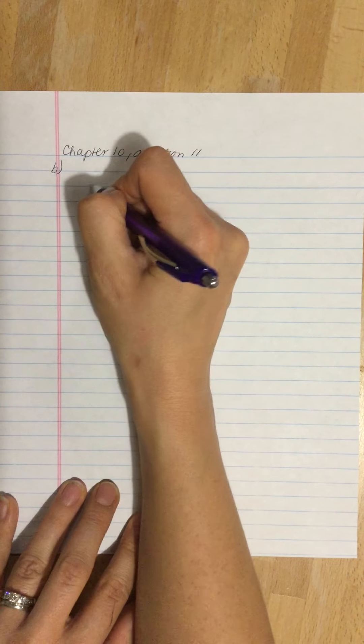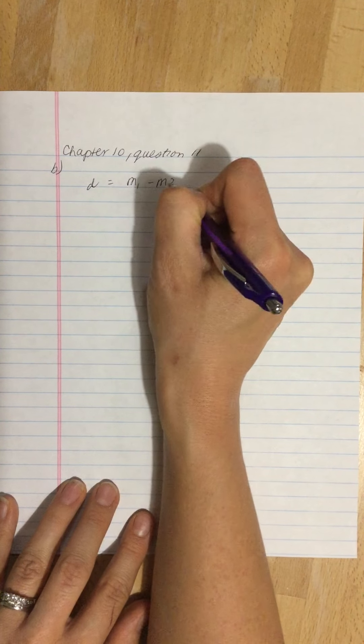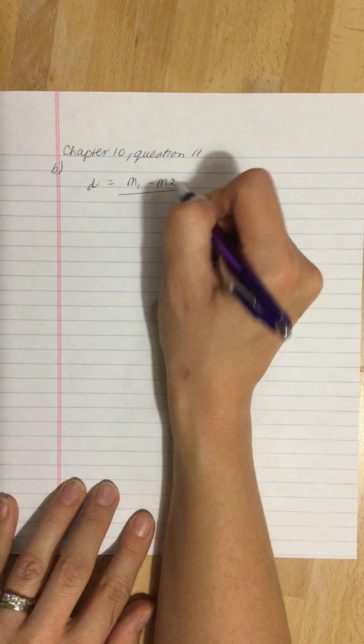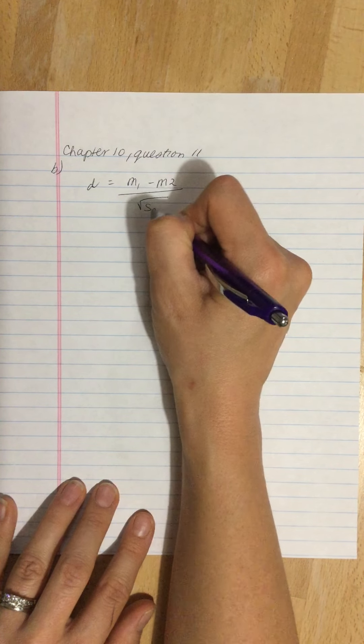So what we're going to do, what we need to do, our formula is our estimated d is equal to m1 minus m2 divided by the square root of the pooled variance.